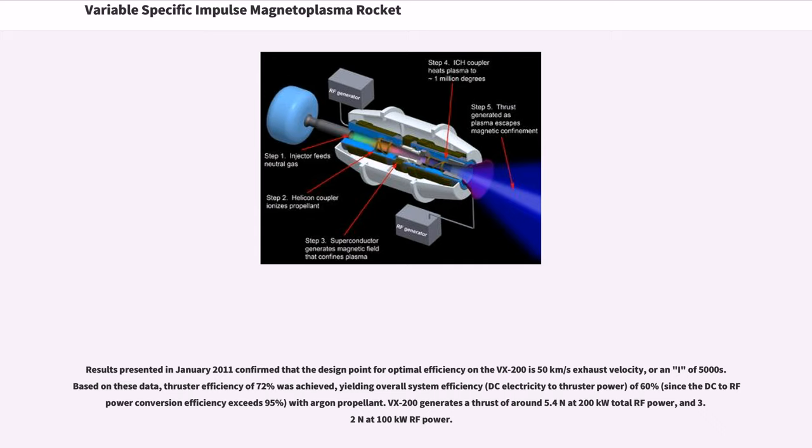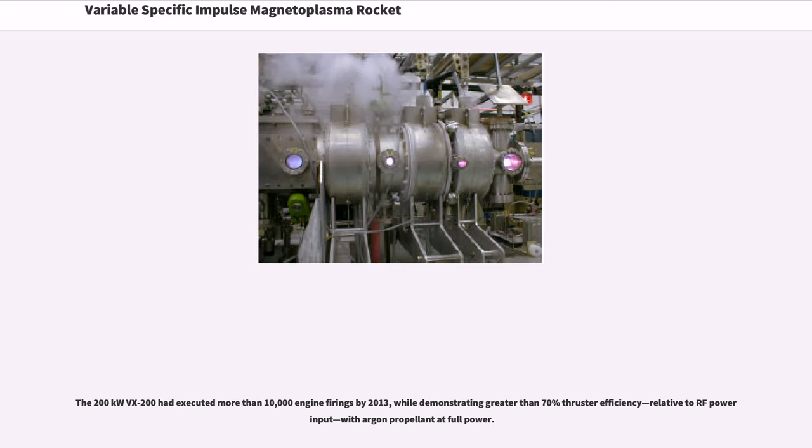Results presented in January 2011 confirmed that the design point for optimal efficiency on the VX-200 is 50 km per second exhaust velocity, or an Isp of 5000 seconds. Based on these data, thruster efficiency of 72% was achieved, yielding overall system efficiency of 60% with argon propellant. VX-200 generates a thrust of around 5.4 N at 200 kW total RF power and 3.2 N at 100 kW RF power. The 200 kW VX-200 had executed more than 10,000 engine firings by 2013 while demonstrating greater than 70% thruster efficiency relative to RF power input with argon propellant at full power.